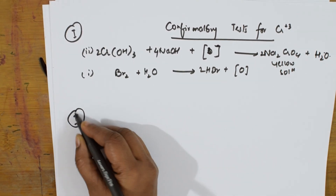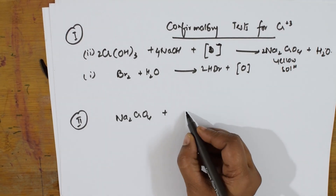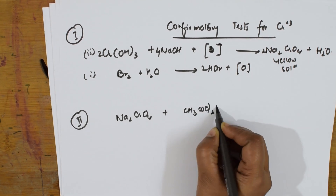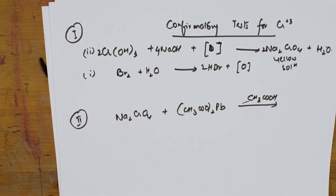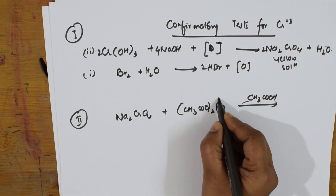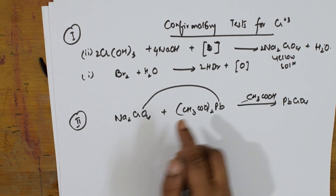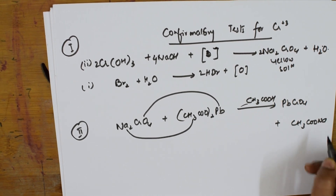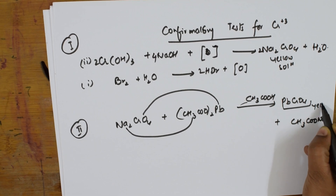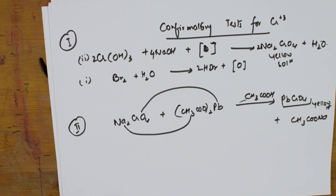The second step for chromium confirmation: take the sodium chromate solution and add lead acetate in the presence of acetic acid. This forms lead chromate (PbCrO₄) as a yellow precipitate, plus acetic acid byproduct. This yellow precipitate confirms the presence of chromium.